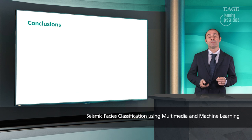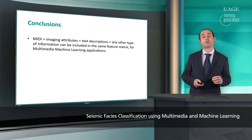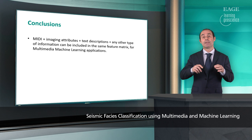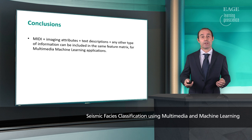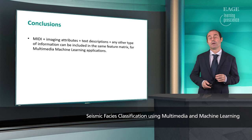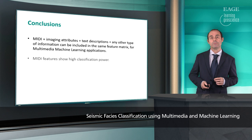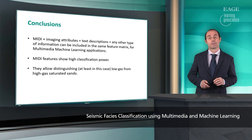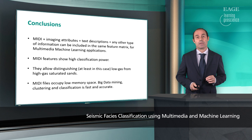In conclusion, MIDI attributes can support standard attributes and other attributes for creating a multimedia footprint — a multimedia input for running machine learning. All this information, including sounds, images, text, and video, can be included in the same hybrid feature matrix for running many different types of learning algorithms. In particular, MIDI features showed very high classification power and allowed us to distinguish, at least in this case, low gas saturated sands from high gas saturated sands.